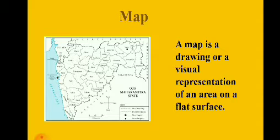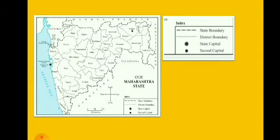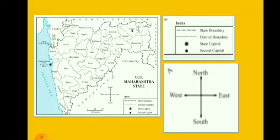Let us see the parts of a map in detail. Here, a map of our Maharashtra state can be seen on the screen. Index is one of the main parts of a map. Index is a list of symbols used on the map. Here, symbols that are used to represent different objects are given along with what they represent. Another important part is directions, which help to find out the location of an object or place. Scale is also important in a map to read it or study it.